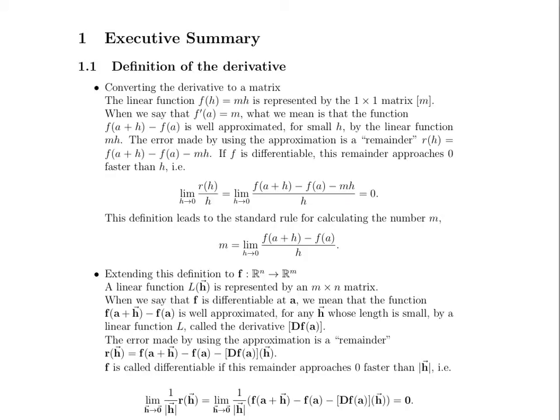Now, this gets a little bit more complicated when functions are not just from R to R, but they're going from R^n to R^m, so you have a lot of different parts to the function, you have a lot of different variables. Well, in this case, we say our linear function is not just going to be a 1 by 1 matrix, our linear function is going to be an m by n matrix. And when we say that F is differentiable at a, we mean that the function, which is still the higher dimensional analog of the difference in function values, is well approximated for an h that's sufficiently small by a linear function, which we call dF of a.